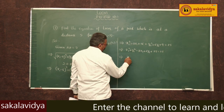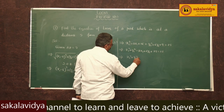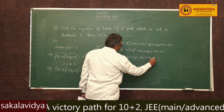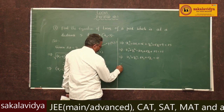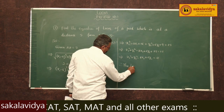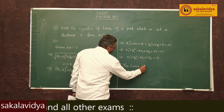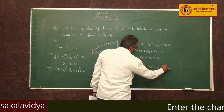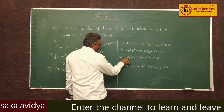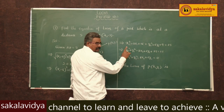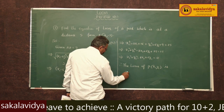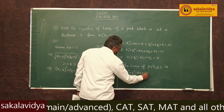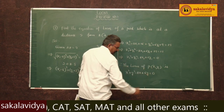So, x1 square plus y1 square minus 8x1 plus 6y1 plus 25 minus 25 equals 0. Therefore, the locus of P(x1, y1) — replacing x1 with x and y1 with y — gives us: x square plus y square minus 8x plus 6y equals 0.